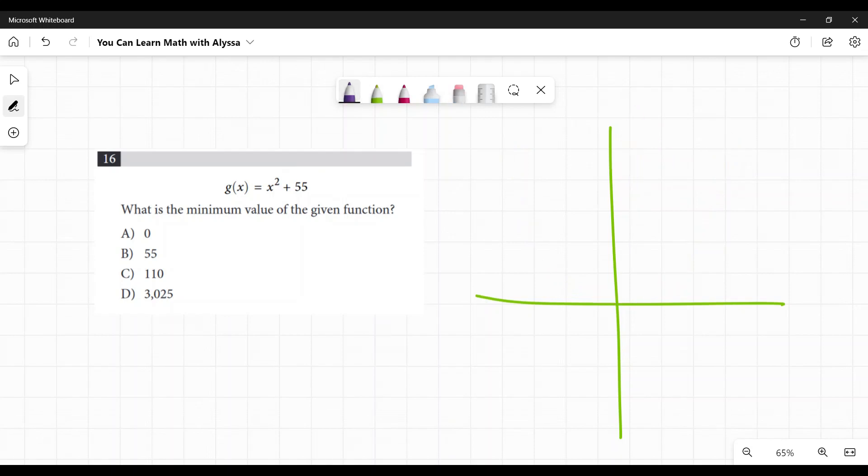So this is going to be way up here. It's going to be up here somewhere. And this is going to be 0, 55. And that is still going to be the minimum of this function.